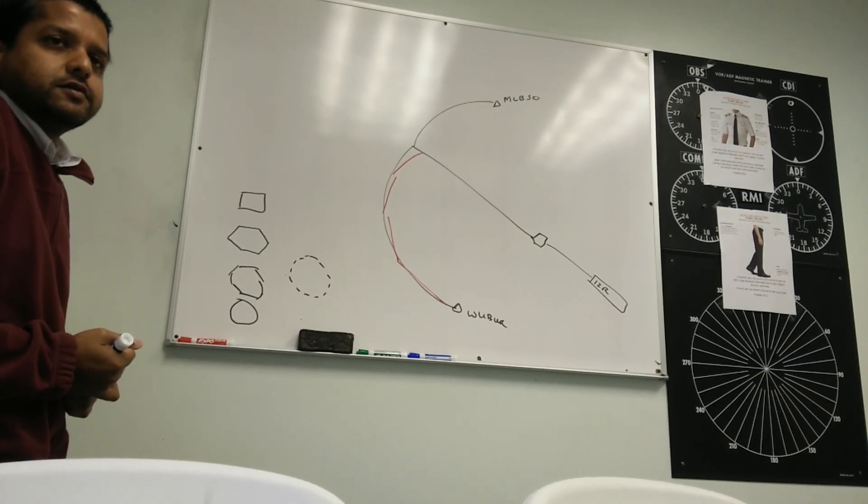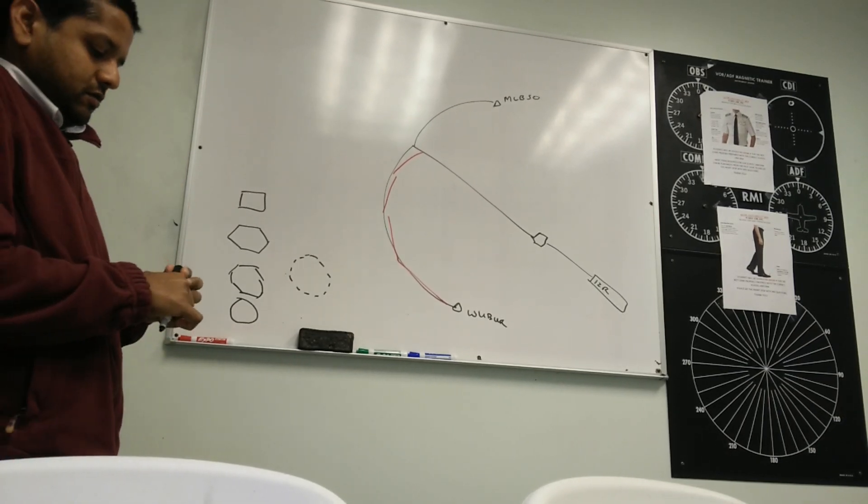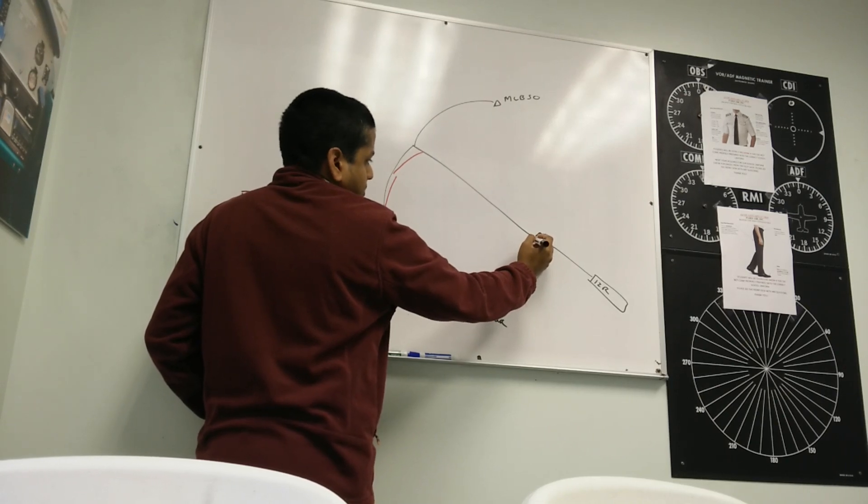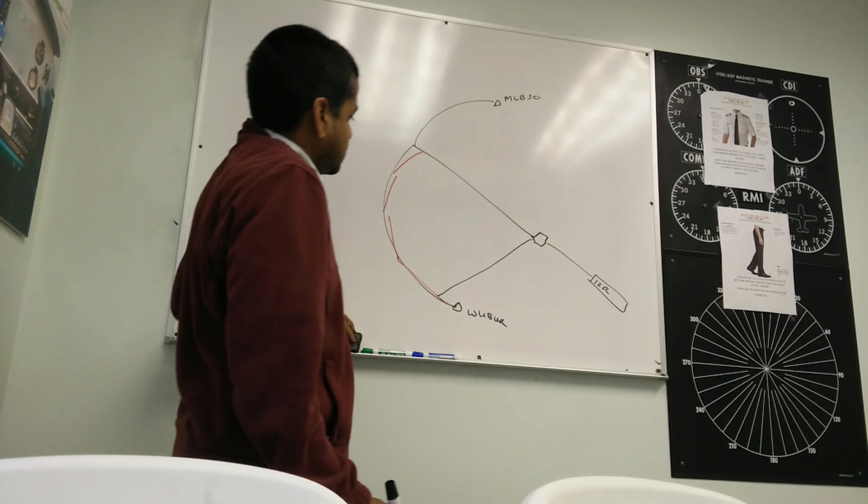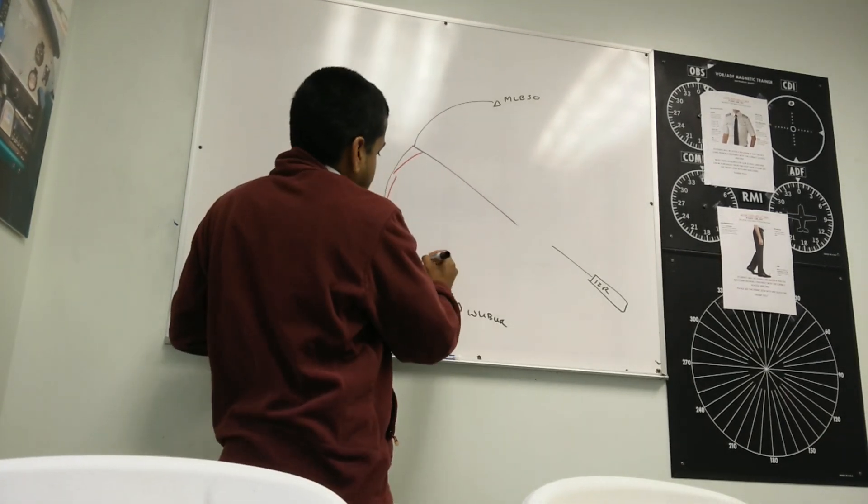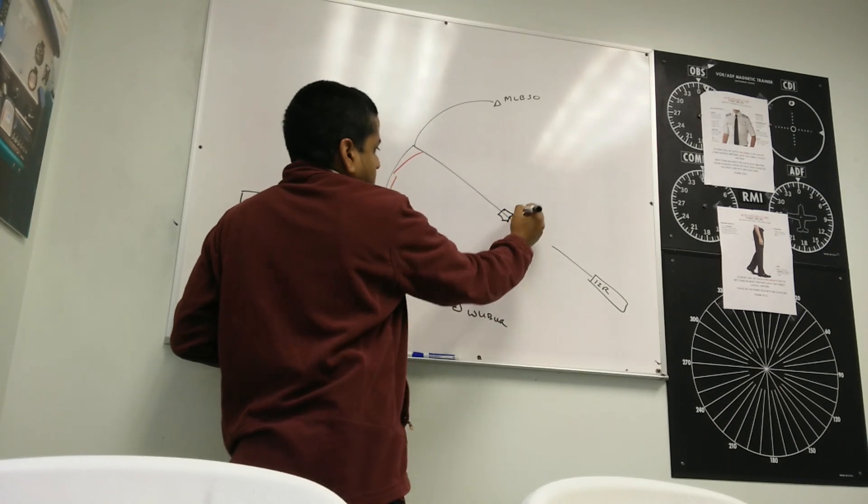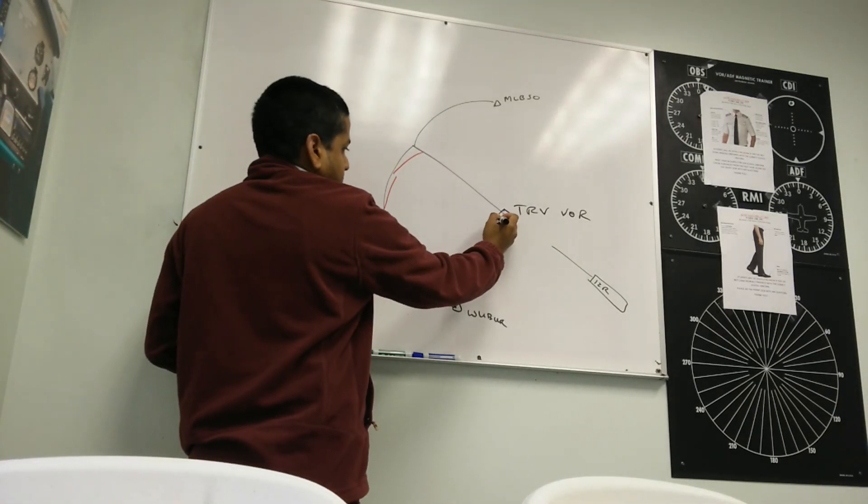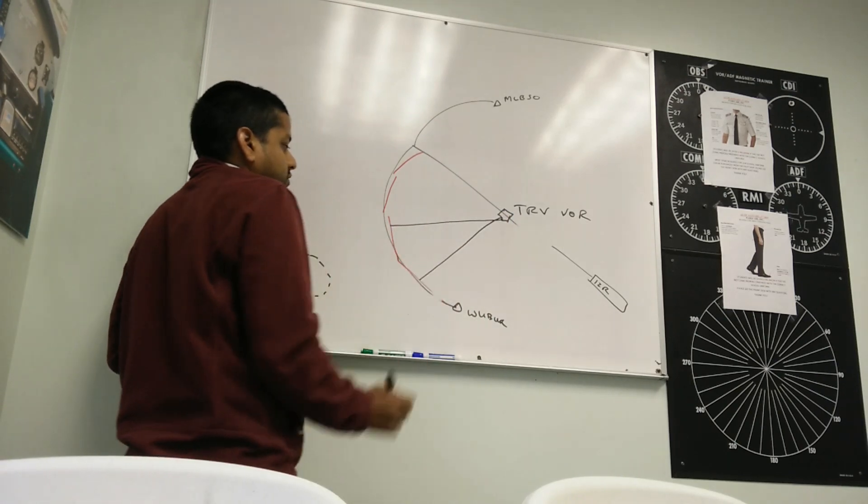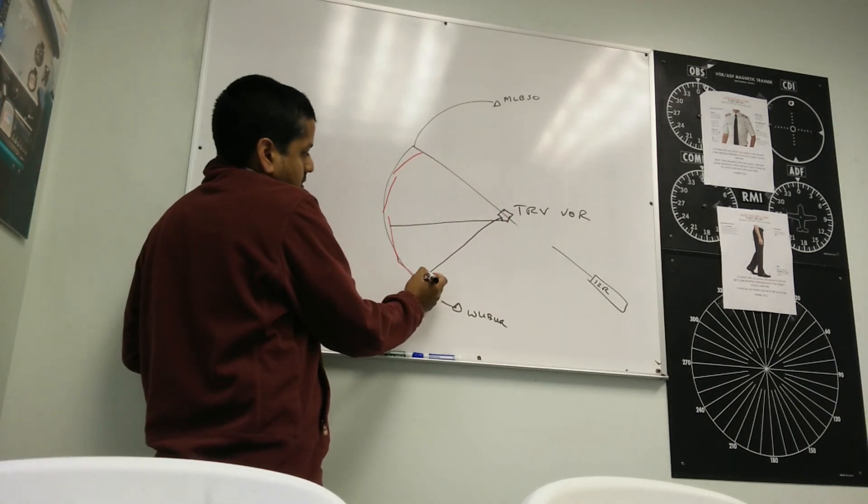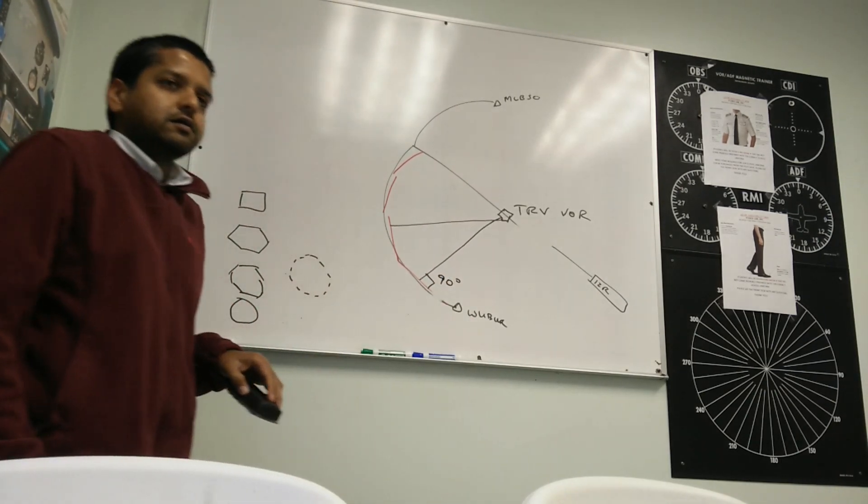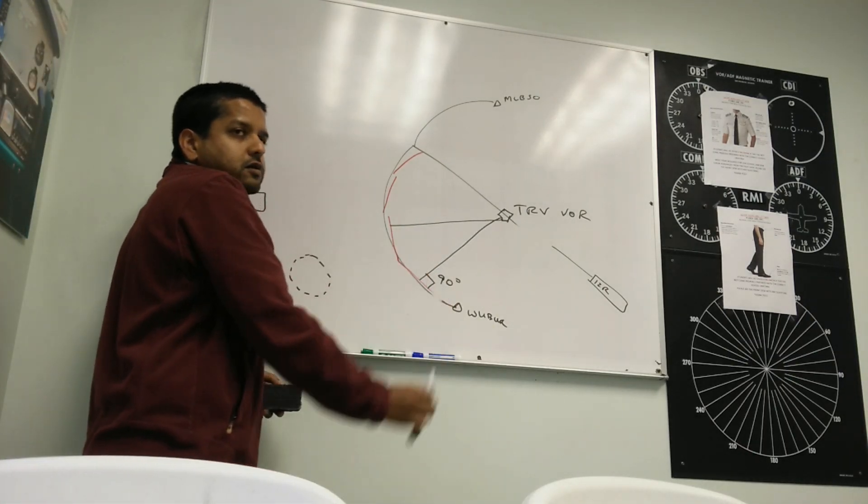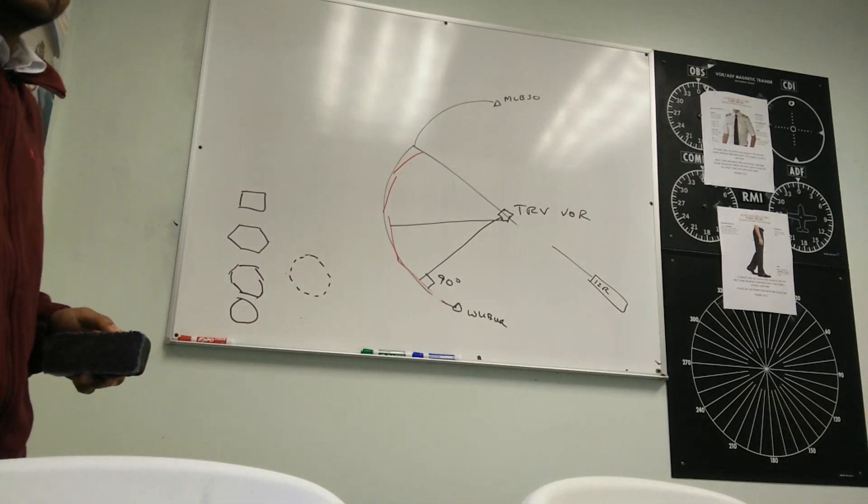So how do you know what heading to fly? Here's how you know what heading to fly. From the VOR, the VOR has radials, right? It has different radials. You'll notice that the radials can cut at a right angle to what heading you want to fly. So if you figure out what radial you're on, you can fly 90 degrees from that heading. You understand that?